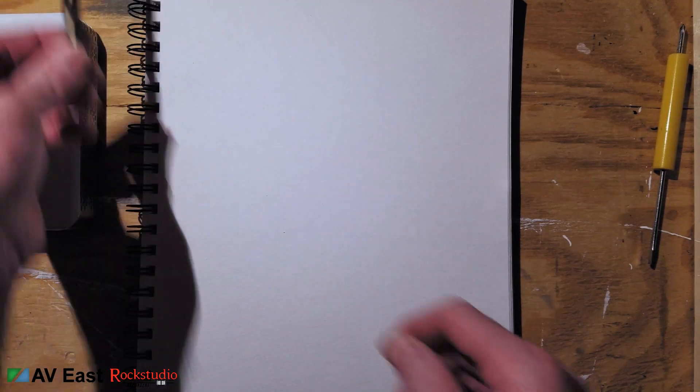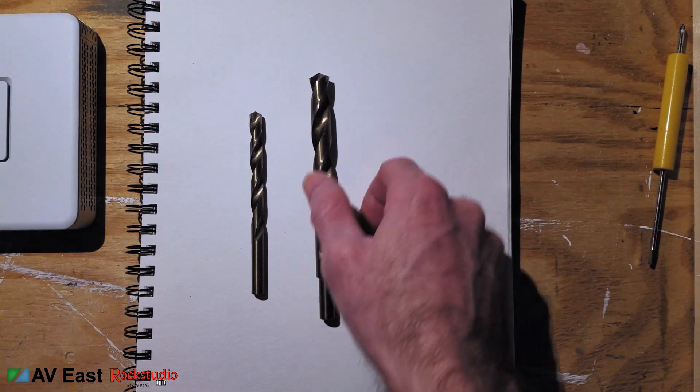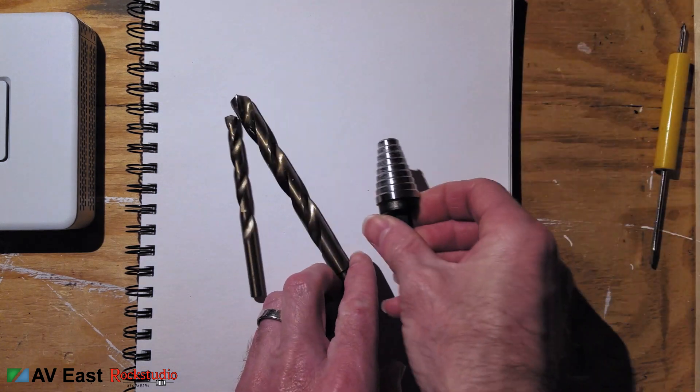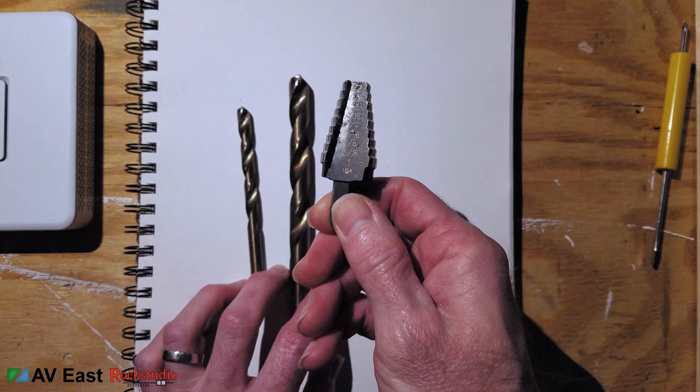Here's some of the tools we're gonna use for this project. Several drill bits and then a stepped bit, some people call it a Christmas tree bit. This bit goes from half inch to one inch or 12.7 millimeters to 25.4 millimeters.